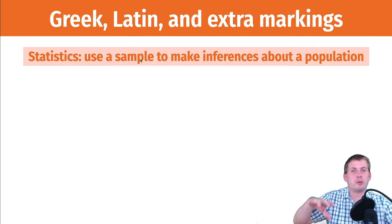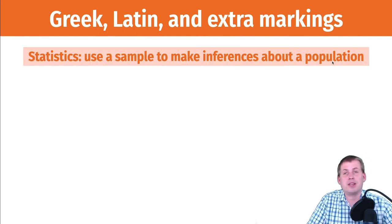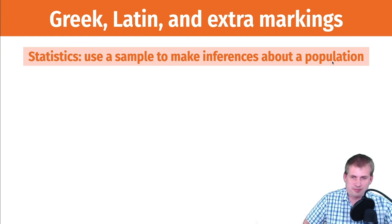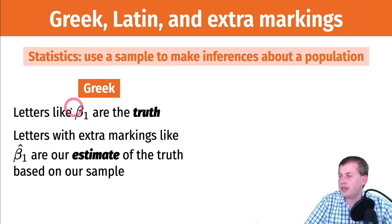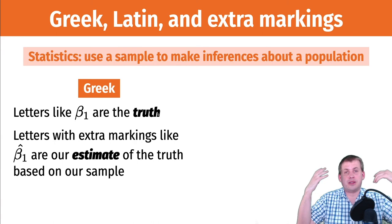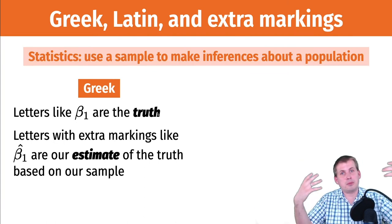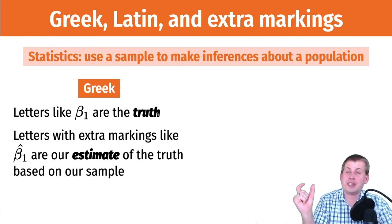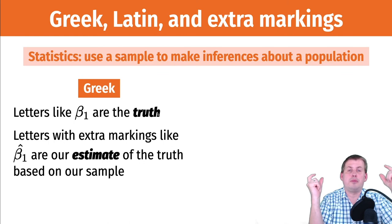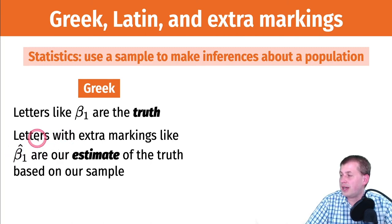To make the distinction between the sample and the population, we use Greek and Latin letters. Greek letters like beta, standing alone, represent some unknown, unmeasurable truth out in the world. For instance, we assume receiving food stamps has some positive effect on reducing childhood mortality — we know it has some positive effect, but we don't know exactly what it is. That positive effect out in the world is our beta.